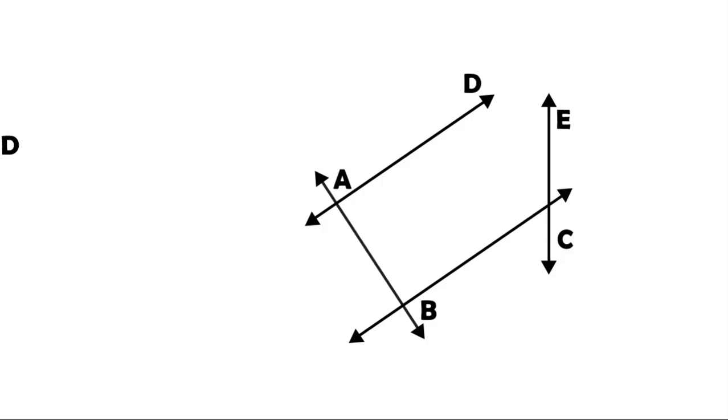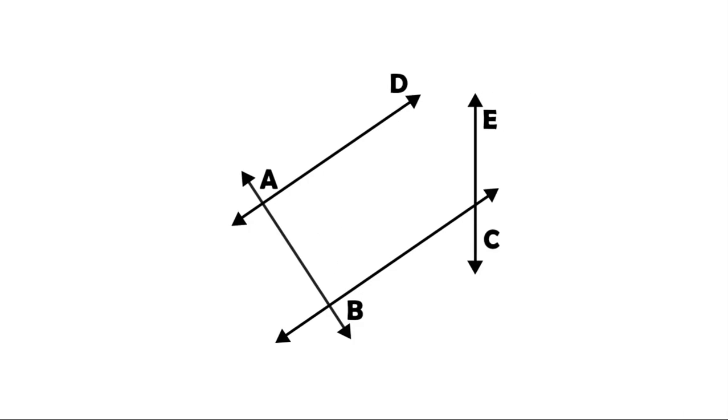Moving to the second figure, we have several intersecting lines. For example, line BC intersects line EC. Also, line BA intersects line AD, but the intersection forms a right angle. Which means that these two lines are perpendicular.